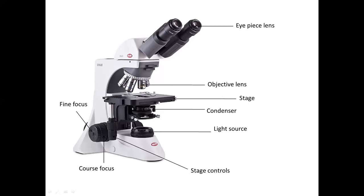The oil immersion or 60x objective has a white band. Below that, you see the stage with the slide clips and the control knob. Below that, the condenser and diaphragm system is located here. The condenser focuses the light onto this area, and the diaphragm changes the amount of light that goes through.